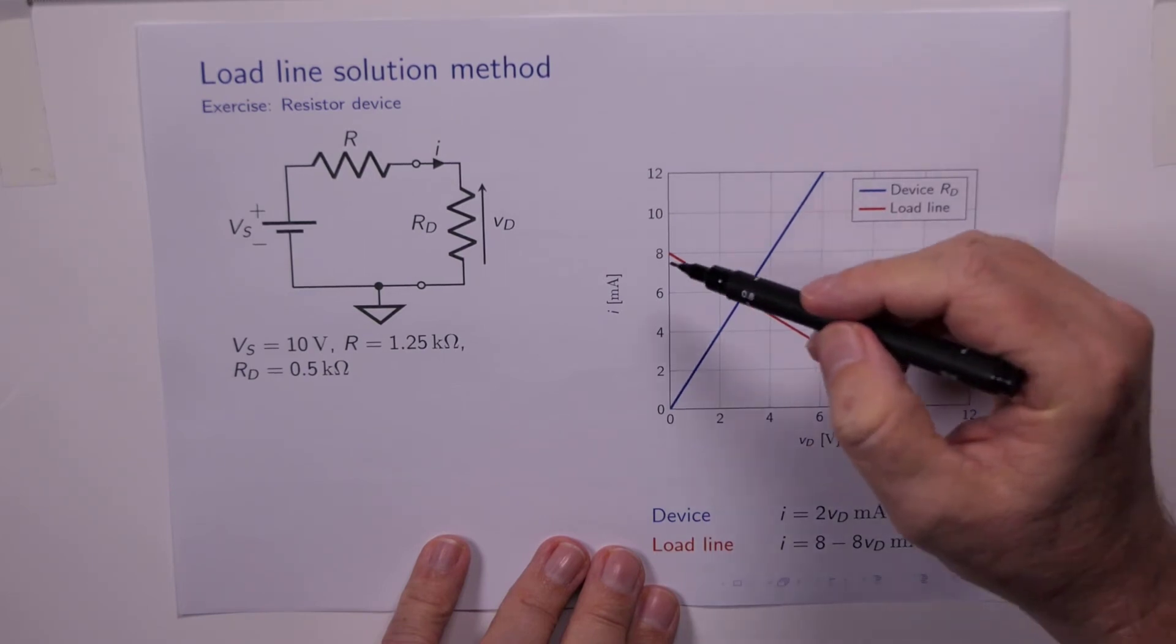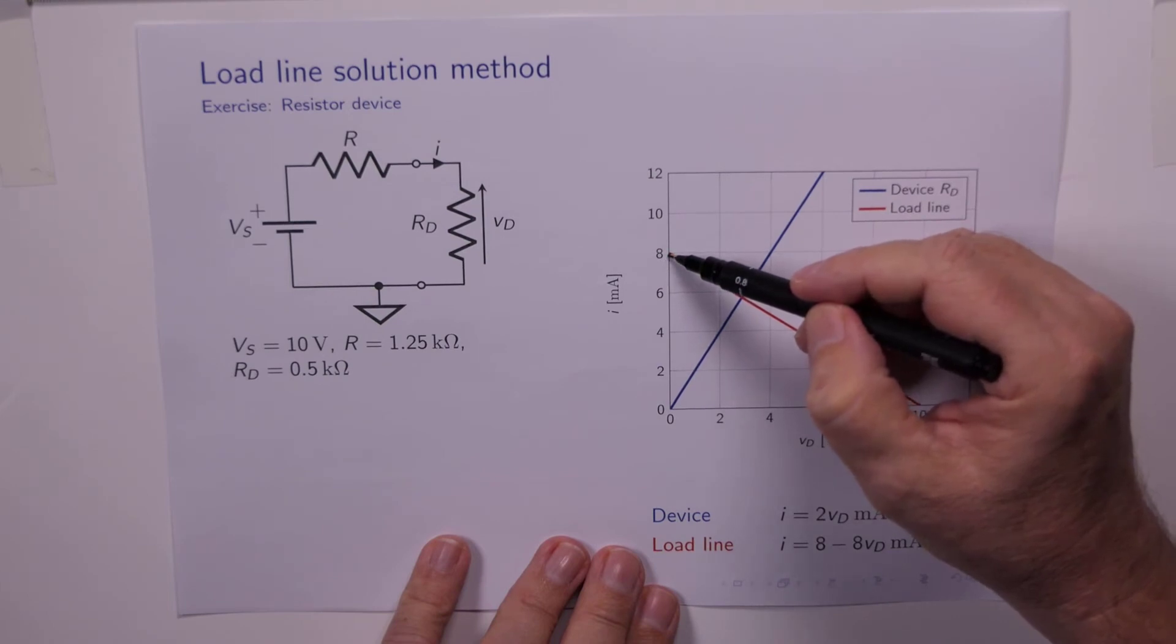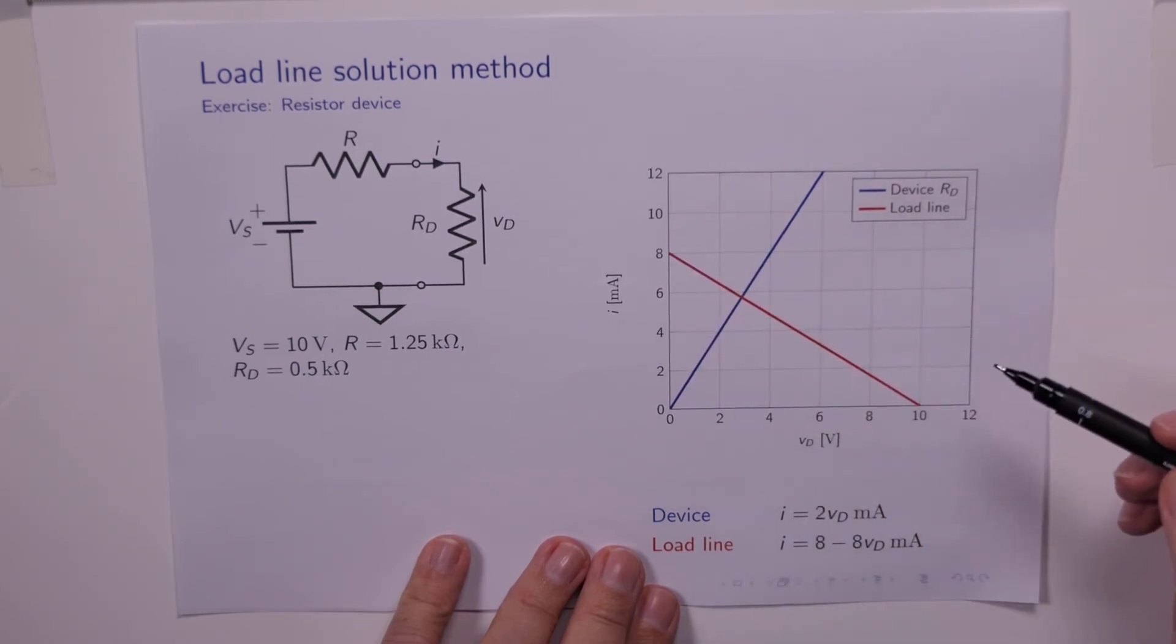Notice that we intersect over here at Vs, 10V. And we intersect on the current axis at 8, which happens to be 10 over 1.25 kΩ.